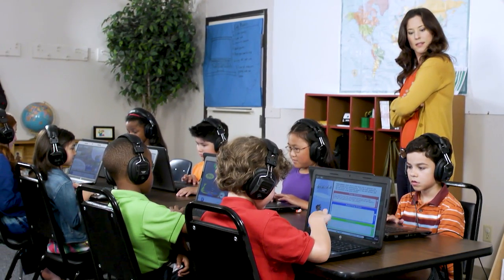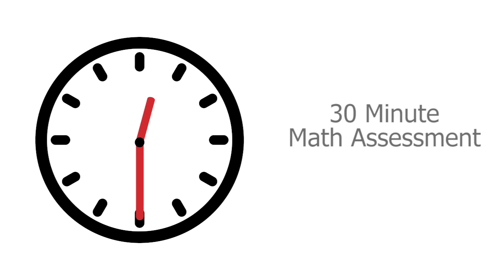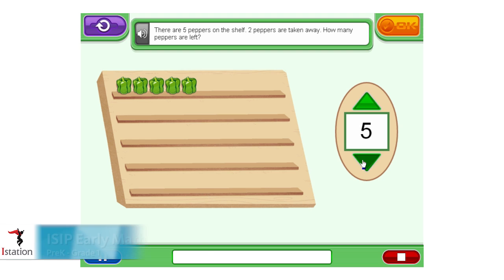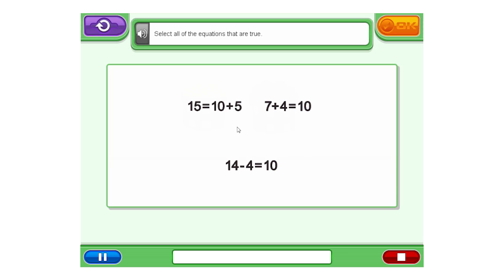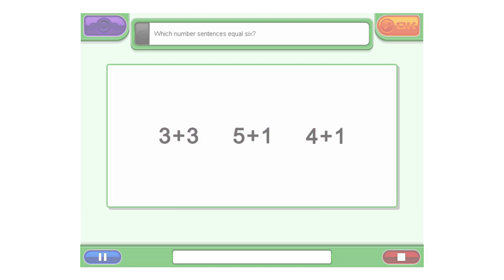The assessments are easy to administer to an entire classroom, taking approximately 30 minutes. ICIP Math and Early Math are computer adaptive within a student's grade level. When a question is answered correctly, learners are given a more challenging problem to solve. If the student answers incorrectly, a less challenging question is provided.